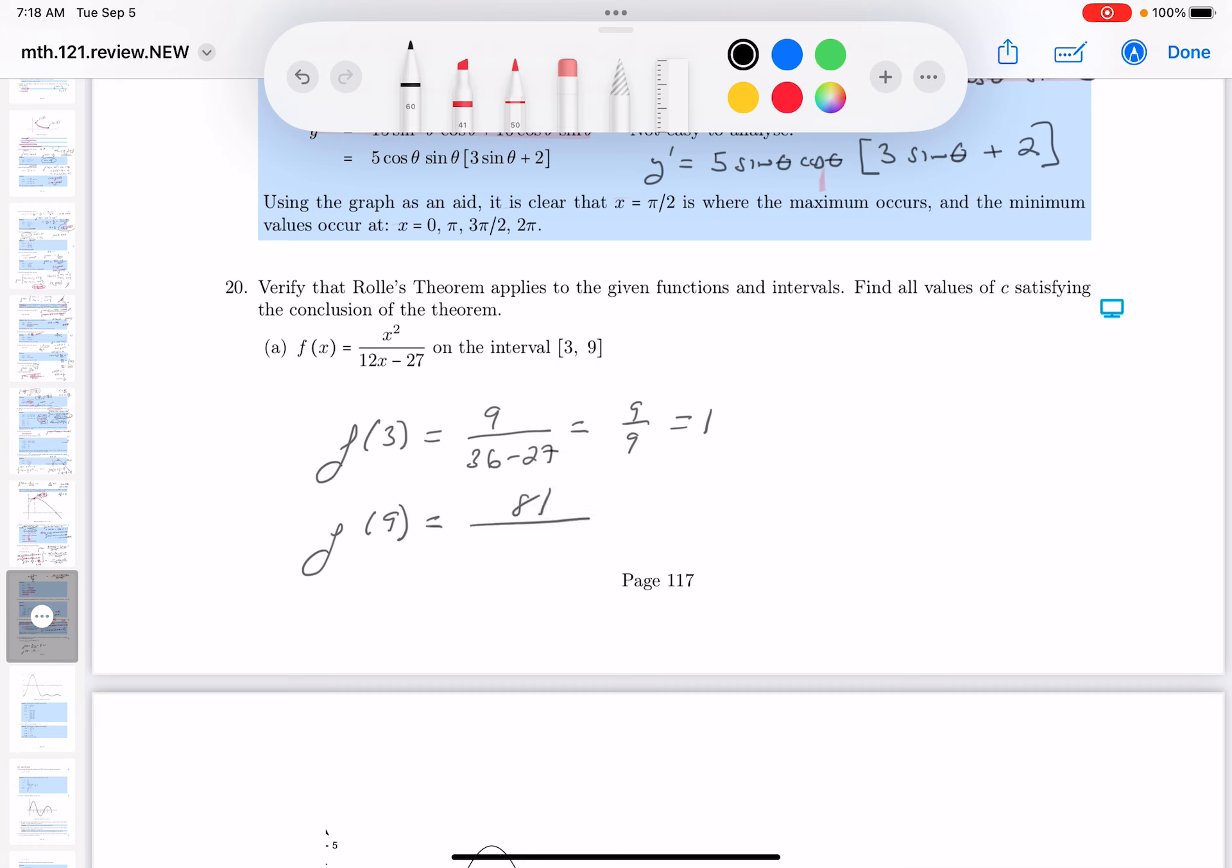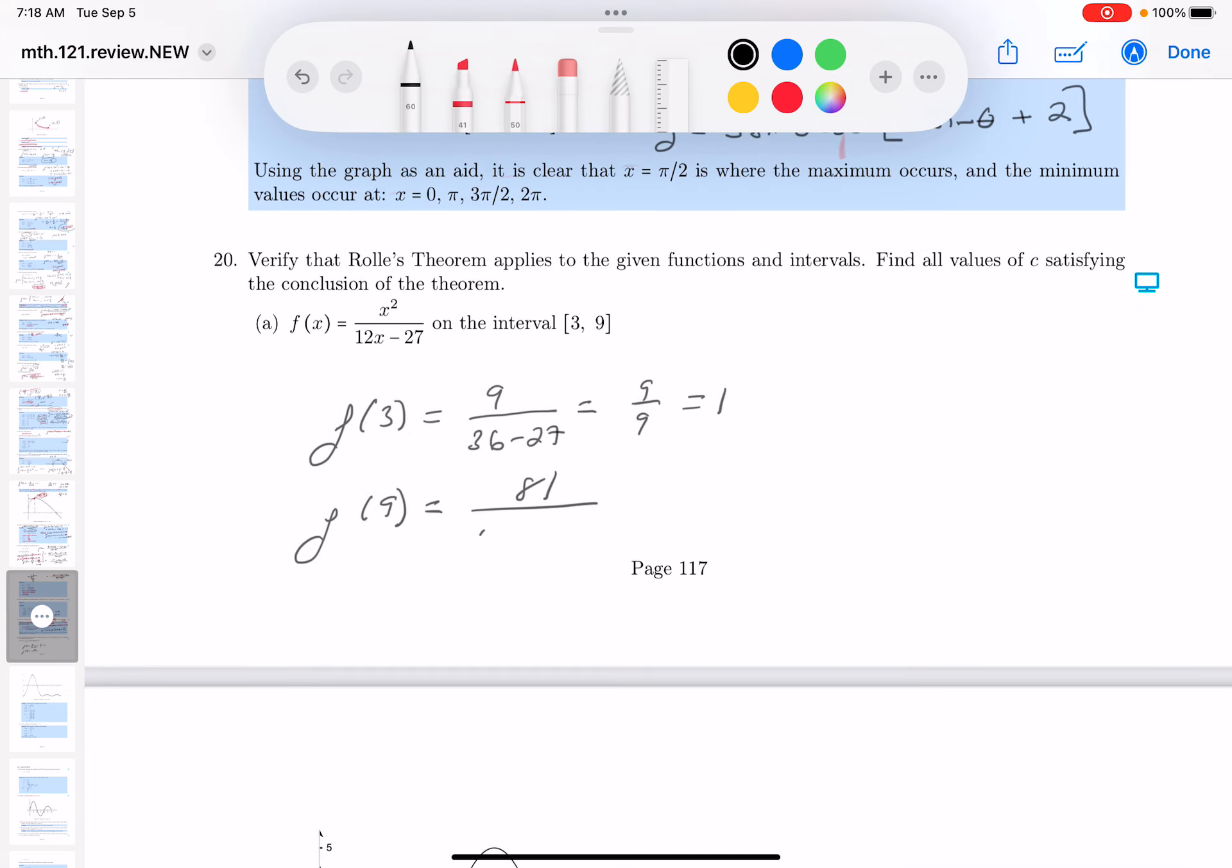I'm also going to do f of 9. What's that going to be? 81. Let's see, 12 times 9, that's 90 and 18, so 108 minus 27. So we're going to get 81 over 81, which is 1. So certainly I wanted that to be the case. And what I have over here is a continuous function.